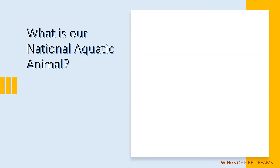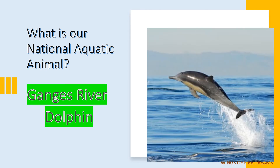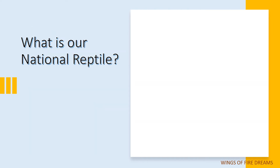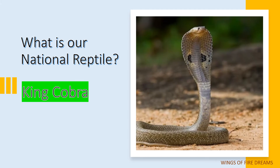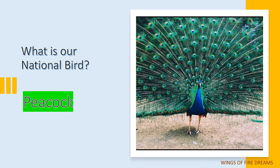What is our national aquatic animal? Gangetic river dolphin. What is our national reptile? King cobra. What is our national bird? Peacock.